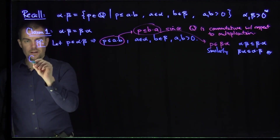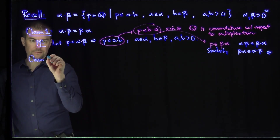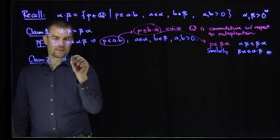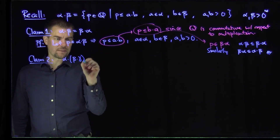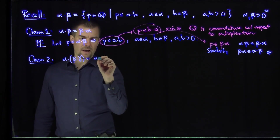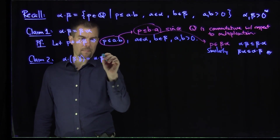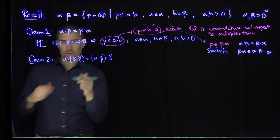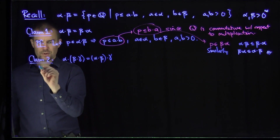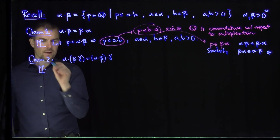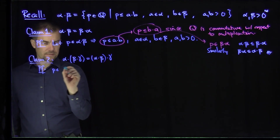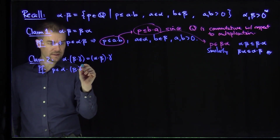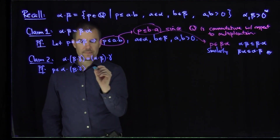We're going to do the second claim. Claim two is associativity: that (α·β)·γ is the same as α·(β·γ). Again, we'll do one of the inclusions — the other inclusion will be exactly the same. So the proof of this claim goes as follows: if we let p be in (α·β)·γ, what does this imply?